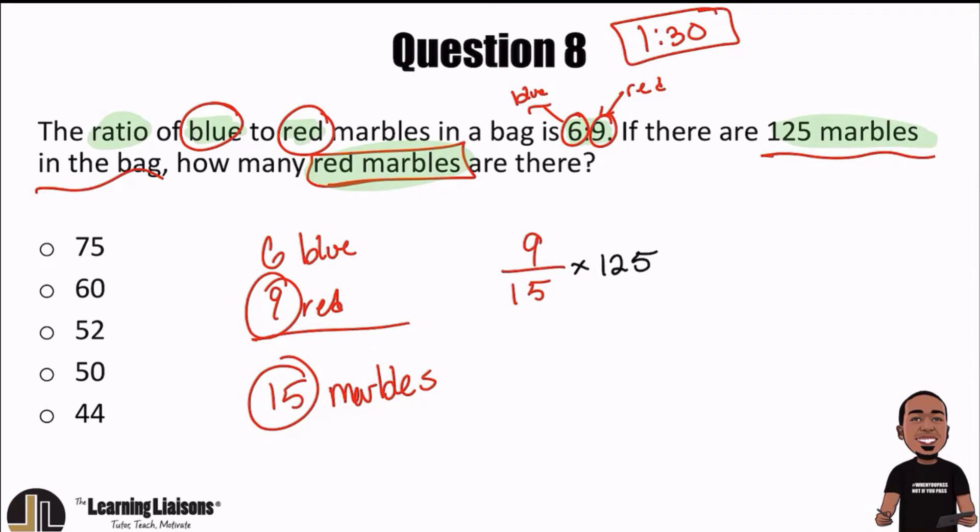Because that's going to give us the number of red marbles. Because if nine out of every 15 are red, go ahead and just use that fraction to your advantage and you're set. So now all we have to do is just grab your calculators, 9 divided by 15, all multiplied by 125, and we get 75.